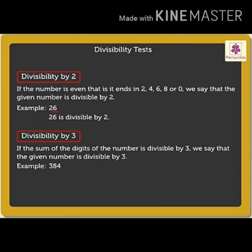For example, 384. If we add the sum of all digits, we get 3 plus 8 plus 4, that equals 15. And 15 is also divisible by 3, so we can say that 384 is divisible by 3.